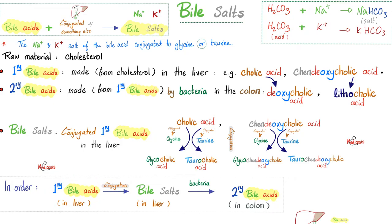In order, this is what happens: primary bile acids are made in the liver, then conjugated with glycine or taurine to give bile salts — still in the liver. Then we push that bile into the duodenum. The bacteria in your gut will transform the bile salts into secondary bile acids. Cholic acid becomes deoxycholic acid; chenodeoxycholic acid becomes lithocholic acid. So to recap: your liver makes primary bile acids, conjugates them to bile salts, and the bacteria convert them to secondary bile acids.